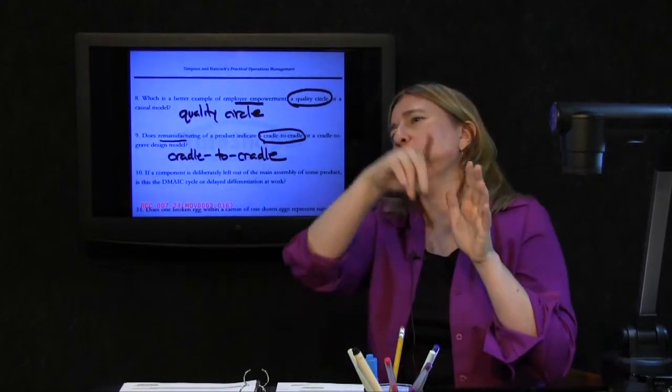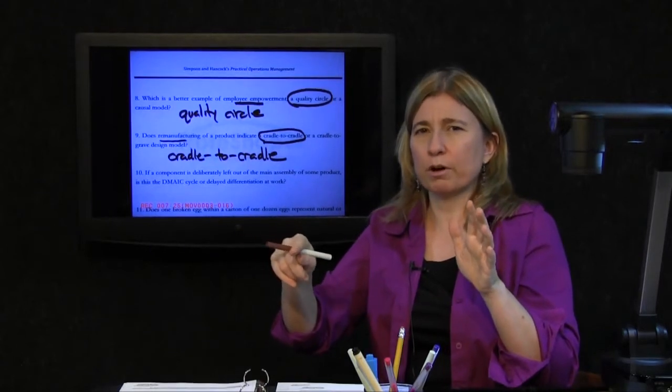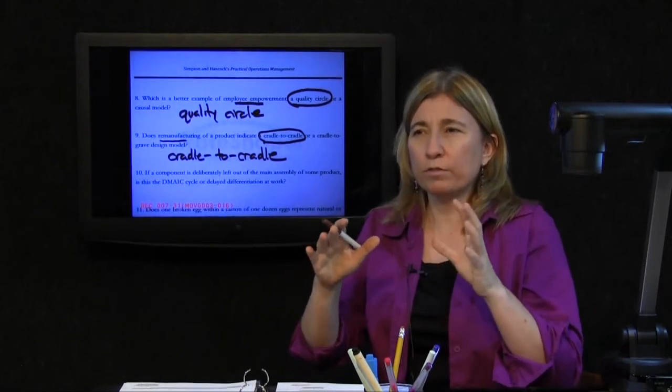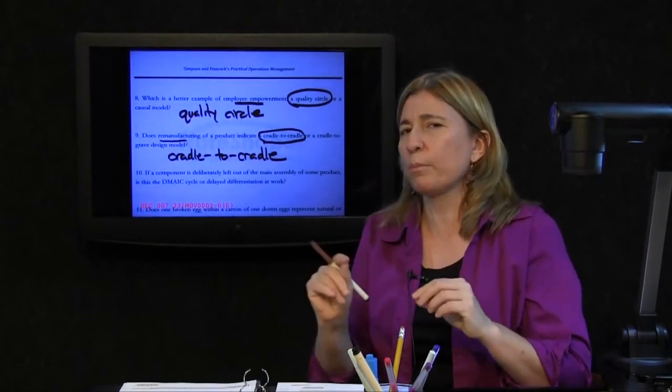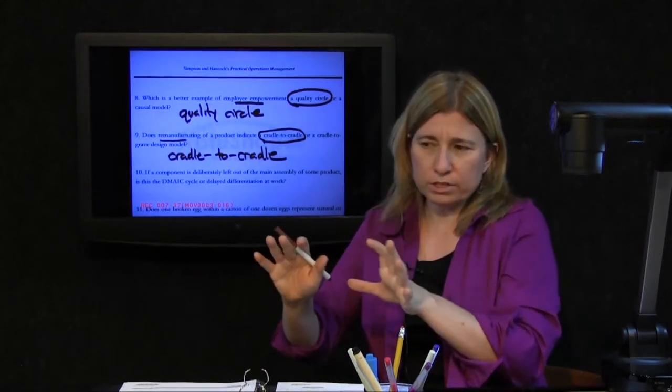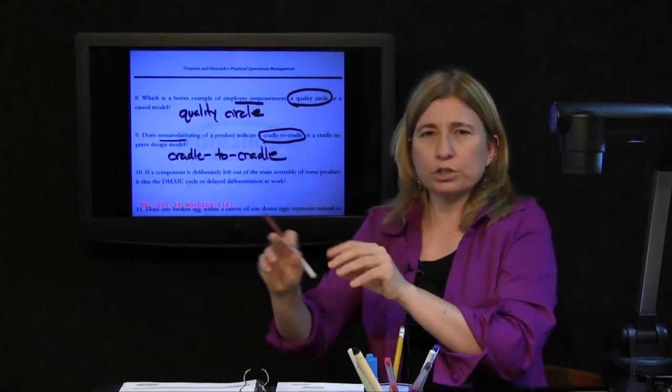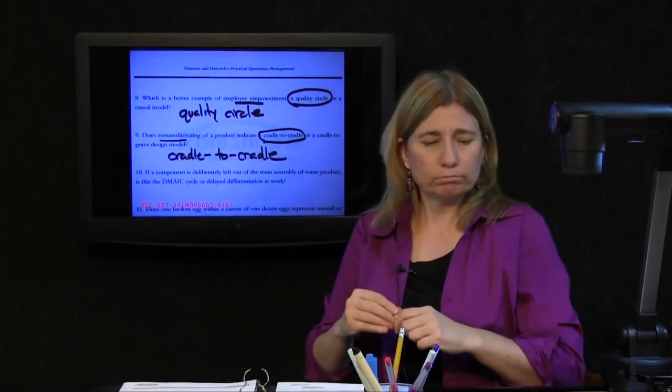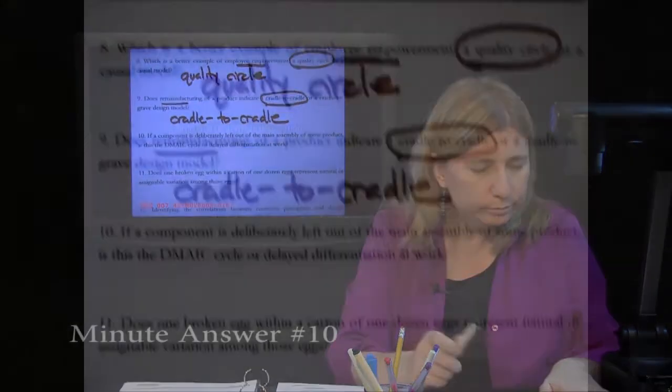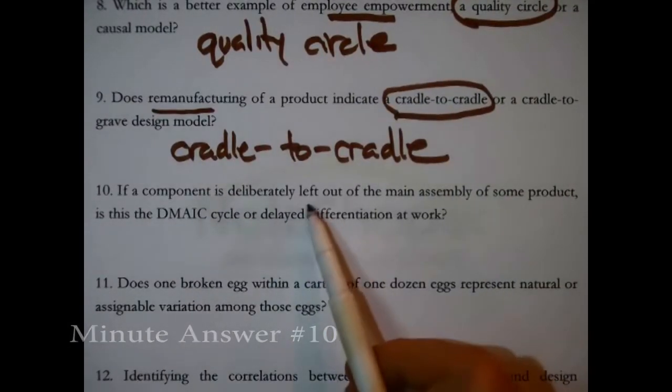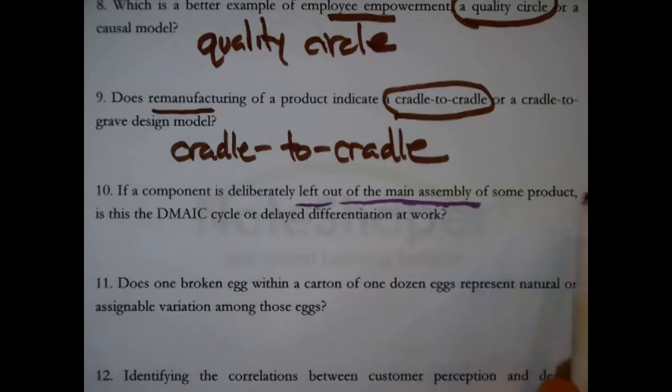Cradle is the start, and then back to the start again. It's a new product again. Now, you may have designed a product such that you have given good thought to its proper disposal. Like, here's how it will be used, and then in the design, this is how it should be disposed of. That is cradle-to-grave. Next question.